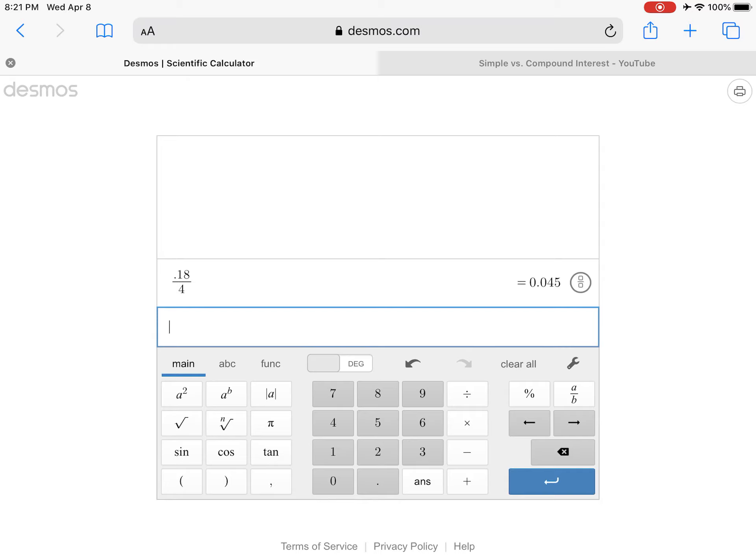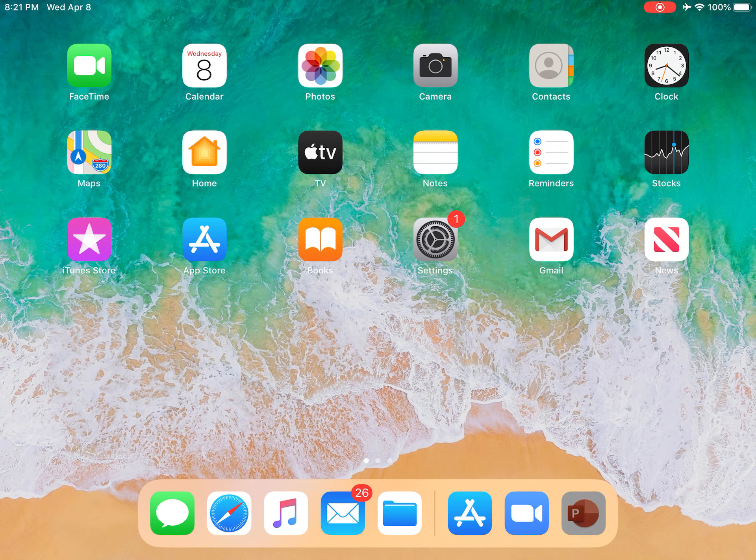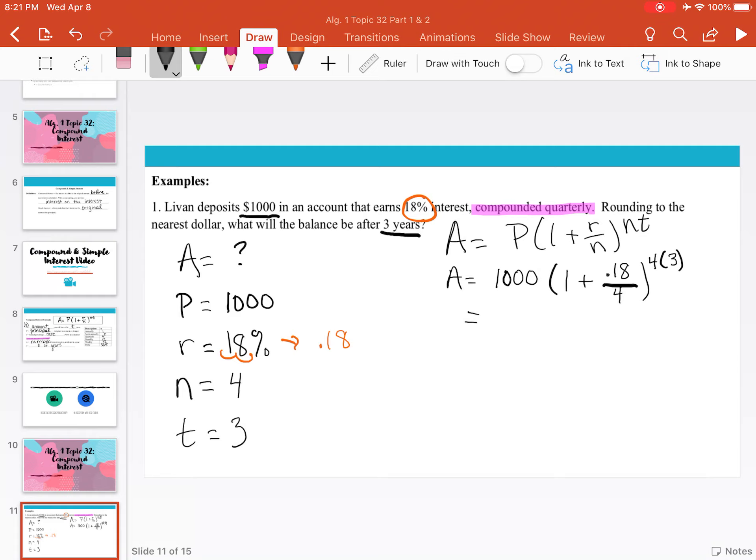I'm also adding 1, so I take my answer and add 1 to it and I get 1.045. So in my parentheses, I'm left with 1,000 times 1.045. And I can simplify my exponent because that's 4 times 3, which is 12.